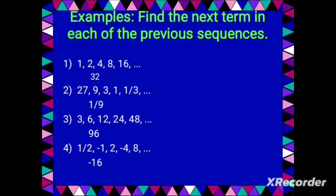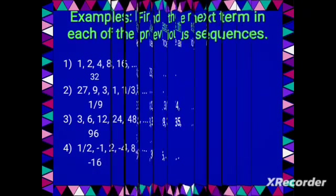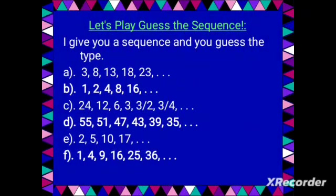For number two, we have the sequence 27, 9, 3, 1, one-third. We find the common ratio first, then multiply it by the last term to get the next term. The common ratio is 1 over 3, because 9 over 27 is 1/3, and 3 over 9 is also 1/3. So 1/3 times 1/3 gives 1/9 as the next term. You can do the same for numbers 3 and 4.